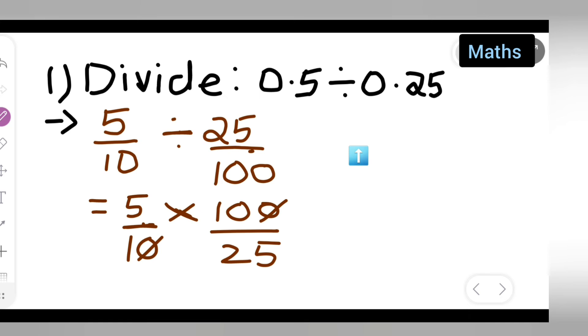Cancel this zero and zero. Then, 5 fives are 25. So your answer is 10 upon 5.